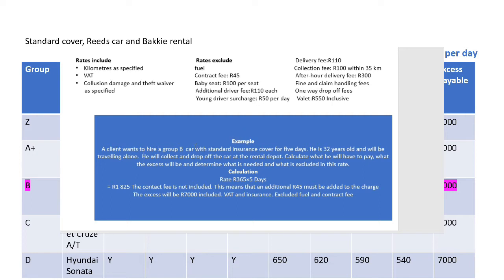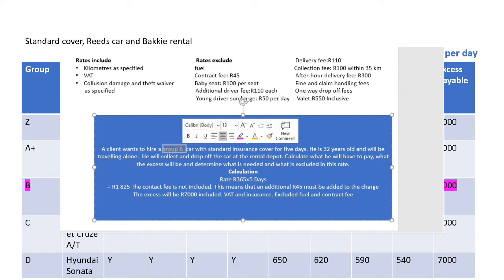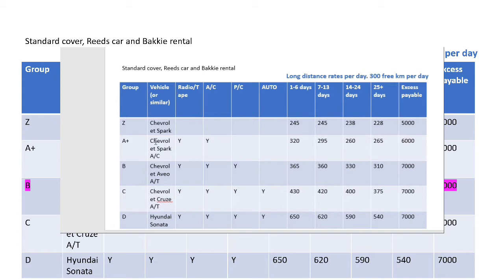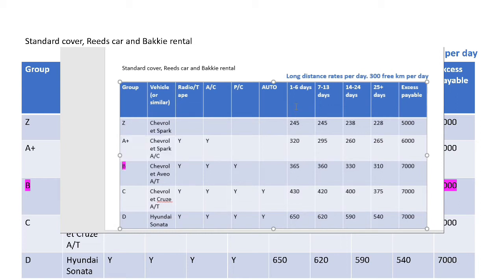We have an example: a client wants to hire a group B car with standard insurance for five days. He is 32 years old and will be traveling alone. He will collect and drop off the car at the rental airport. We need to calculate what he would have to pay, what the excess will be, and determine what is included and excluded in this rate. We look at the standard insurance table, group B car, for one to six days, so the amount is 310.